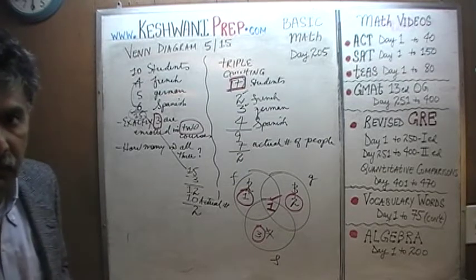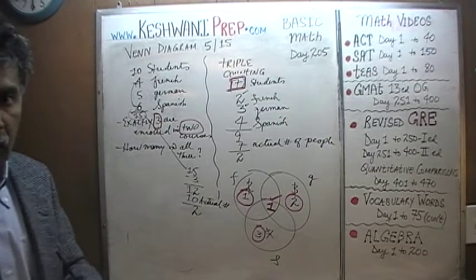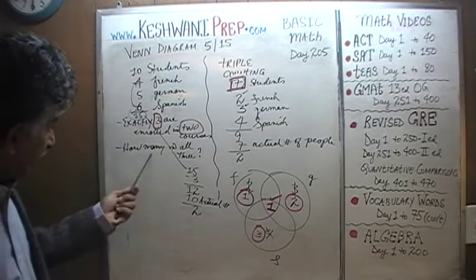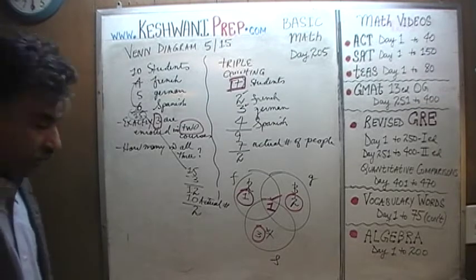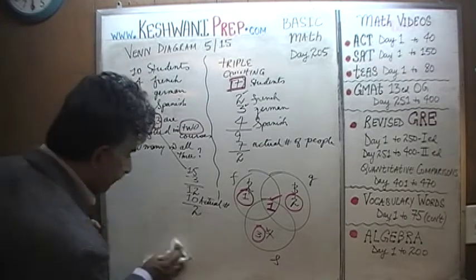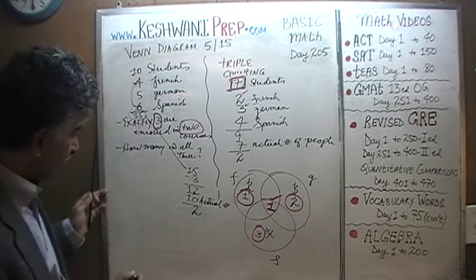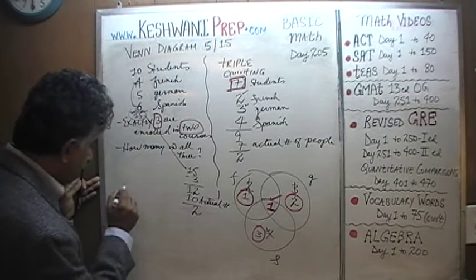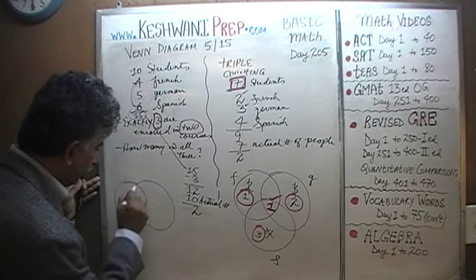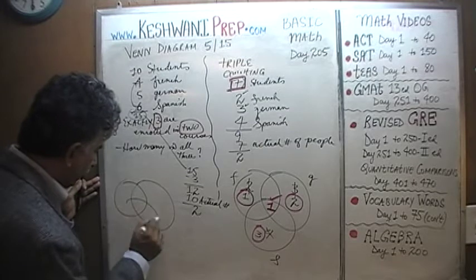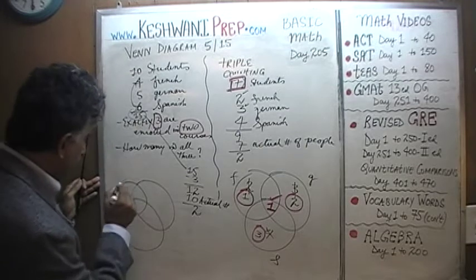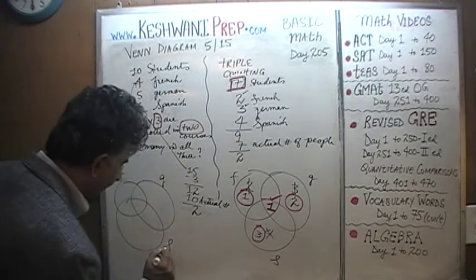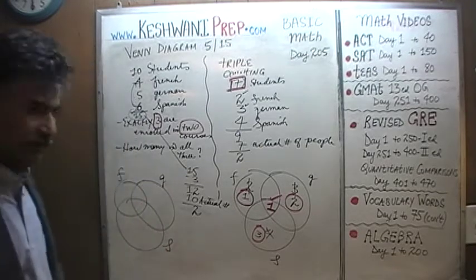Now we're going to draw the Venn diagram and show our work. Even though the Venn diagram is not necessary here — we already answered the question — just for the sake of learning, let's put it together. Here is French, here is German, and here is Spanish.